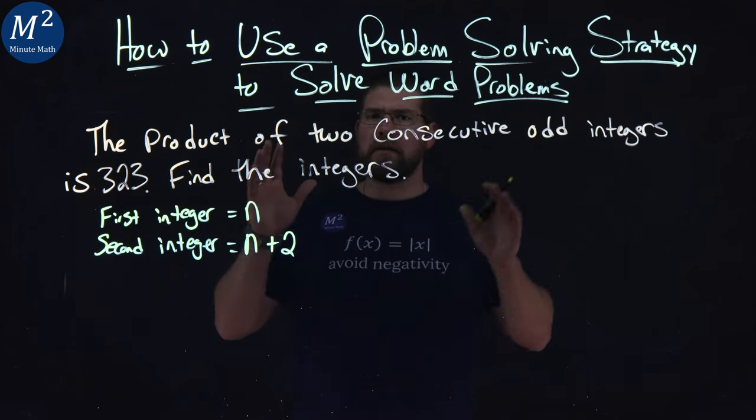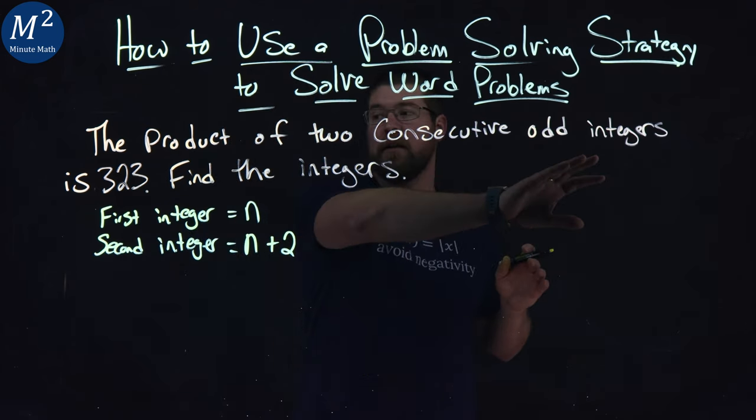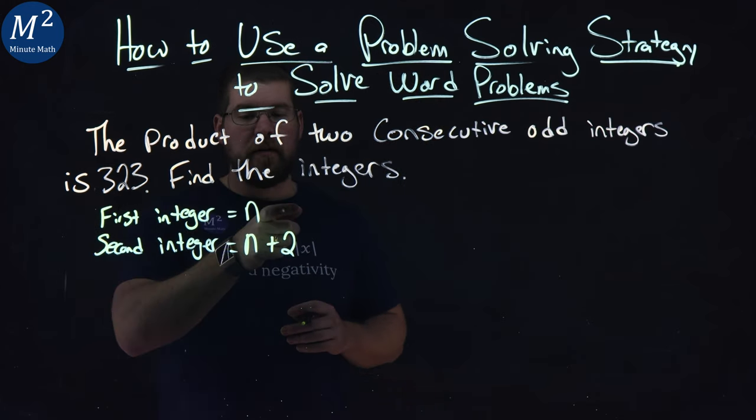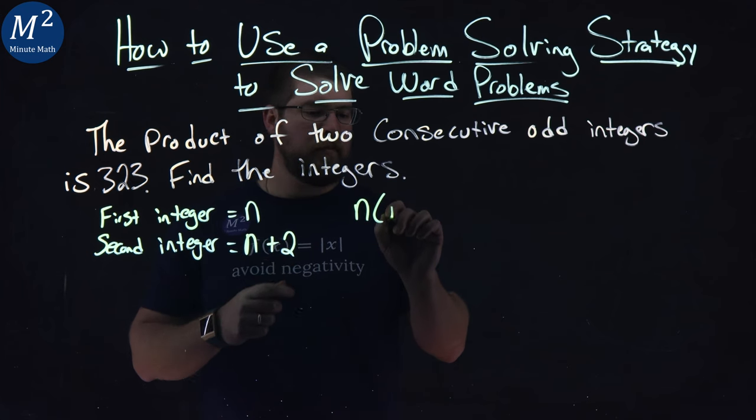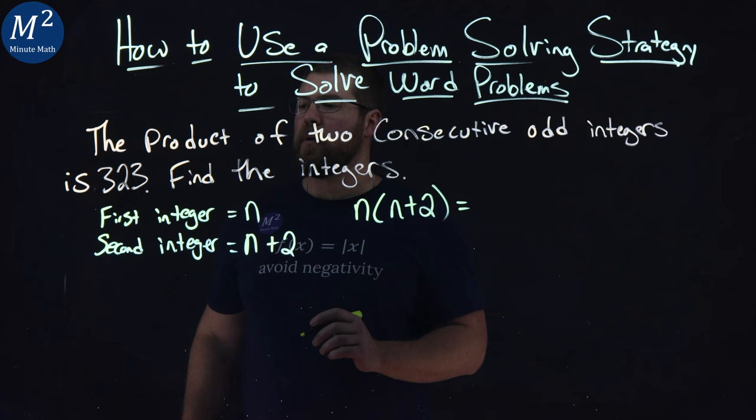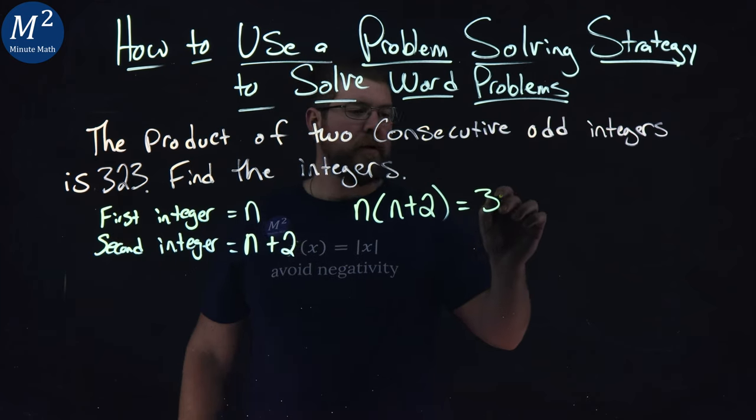So they tell us the product of two consecutive odd integers is 323. We've labeled the first one being n, our second one is n plus 2. So n times n plus 2 is the product, multiplying that equals 323.